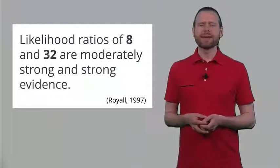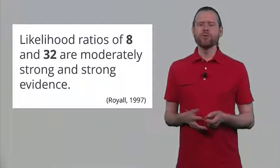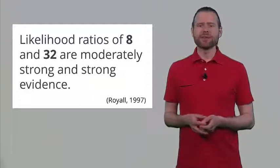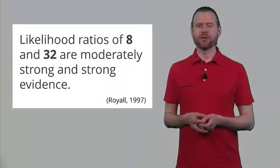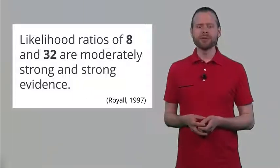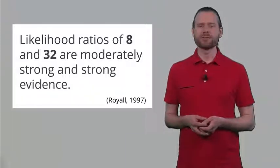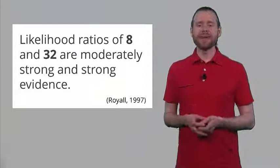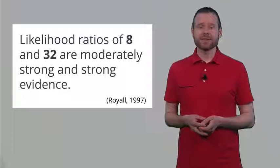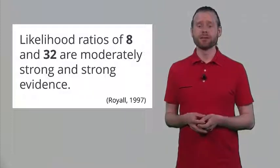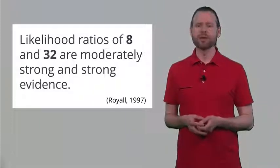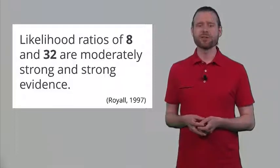When you calculate likelihood ratios, there are two cut-offs — 8 and 32 — which are considered moderately strong evidence and strong evidence respectively. In the first example we had not yet reached moderately strong evidence for the difference in hypotheses. In the latter case, when we observed 4 out of 10 flips coming up heads, we can see that this was very strong evidence for the fair coin hypothesis compared to the alternative that theta = 0.8.